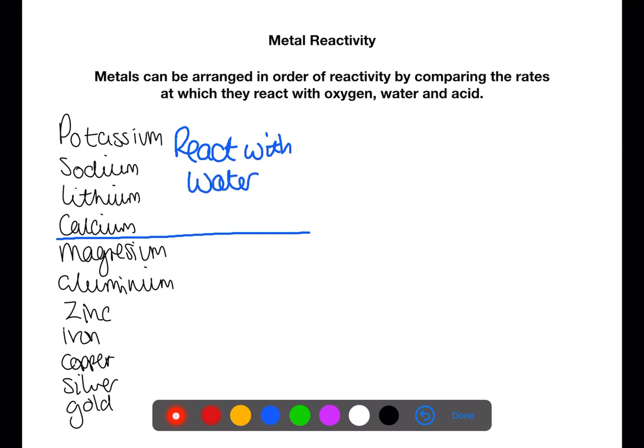Magnesium, aluminium, zinc and iron all react with acid, with magnesium reacting the most quickly. And then copper and silver will react with oxygen. Gold does not react.